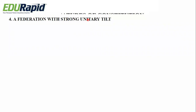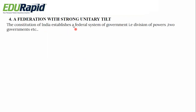Next is federation with strong unitary tilt. India is called quasi-federal in nature — not a true federal. The constitution of India establishes a federal system with division of powers and two governments. There is a central list, state list, and Lok Sabha and Rajya Sabha at the center, and state legislative assemblies and councils. However, the unitary tilt appears during emergency situations — already three times national emergency has happened in India. During emergency, India acts as a single authority, and the powers of the state come under the central government. That is called the unitary tilt.